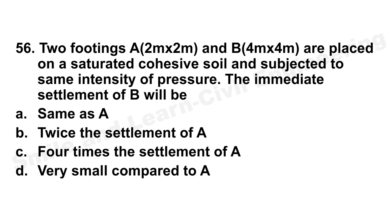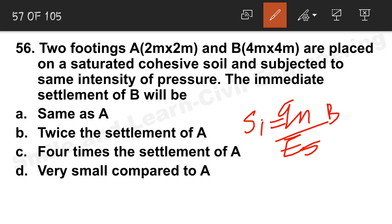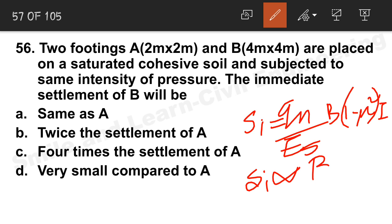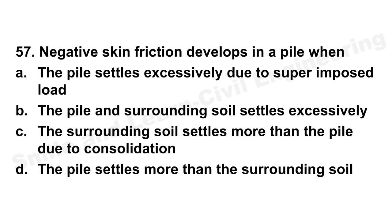Question 56: Two footings A (2m × 2m) and B (4m × 4m) placed on saturated cohesive soil are subjected to the same intensity of pressure. Immediate settlement formula: Si = qn/Es × B × (1 − μ²) × I. Since Si is proportional to B, footing B will have four times the settlement of A. Option C is the correct answer.